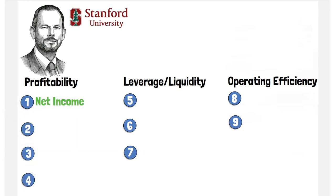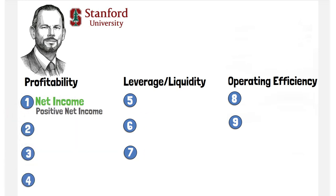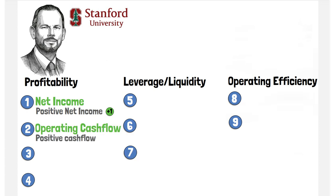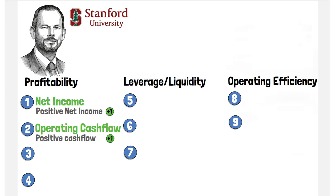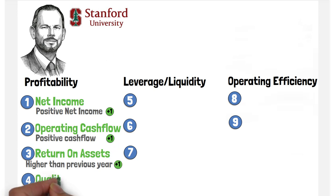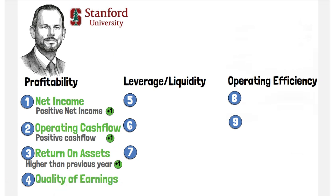First, we have net income. If there is positive net income in the current year, the company gets one point. Next, operating cash flow — positive cash flow is required from operations in the current year. Return on assets: current return on assets must be higher than the previous year. And quality of earnings: cash flow from operations must exceed net income.